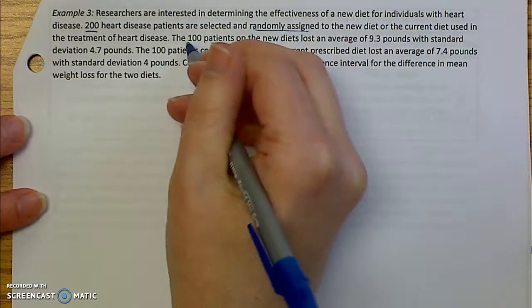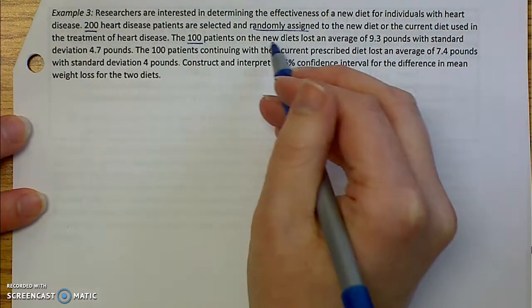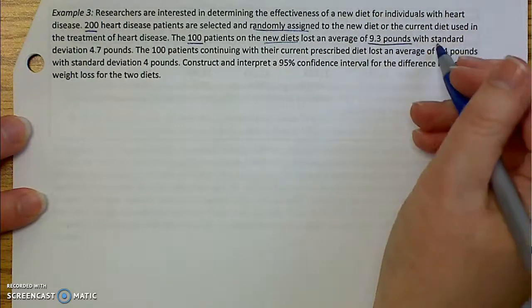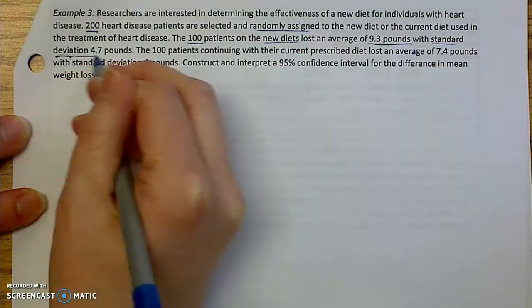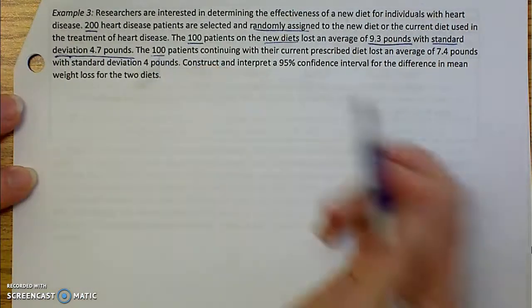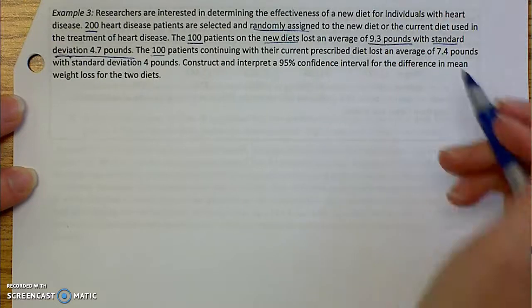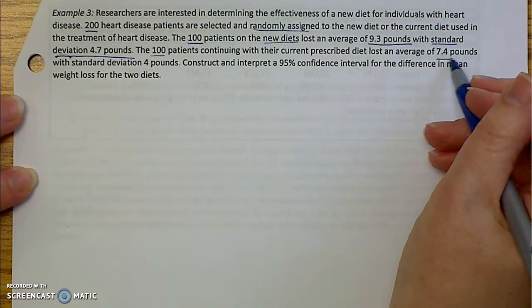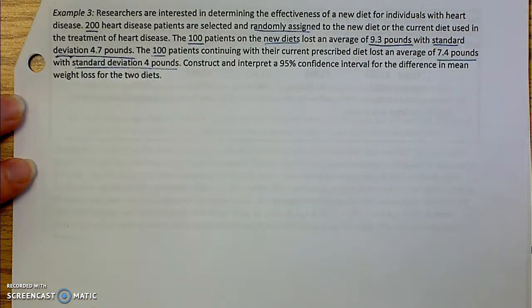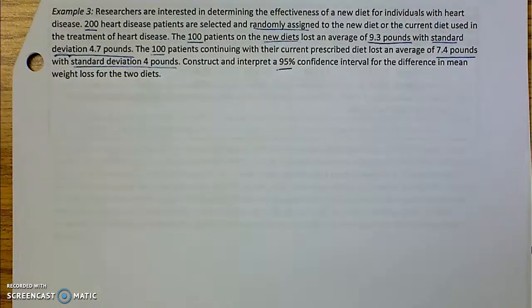100 of the patients that were on the new diet lost an average of 9.3 pounds with a standard deviation of 4.7 pounds. The 100 patients that were continuing with their current prescribed diet lost an average of 7.4 pounds with a standard deviation of 4 pounds. Construct and interpret a 95% confidence interval for the difference in mean weight loss for the two diets. Okay. Four-step process. Here we go.